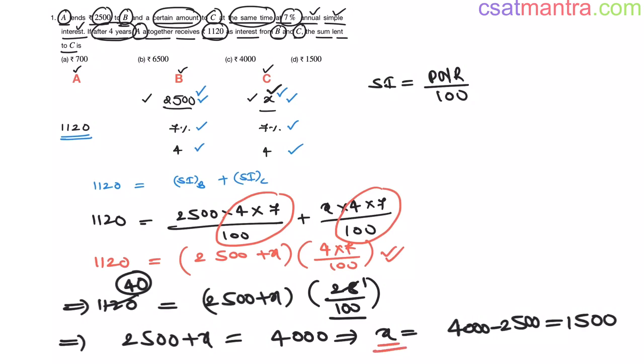So, X is the sum lent to C, our answer is C. We know the formula for simple interest. That is only one formula. Simple interest is equal PNR by 100.